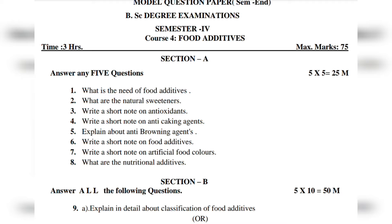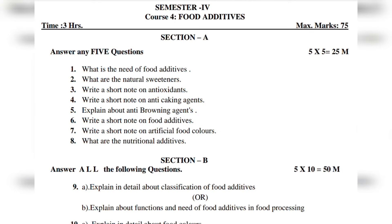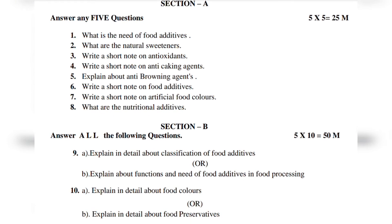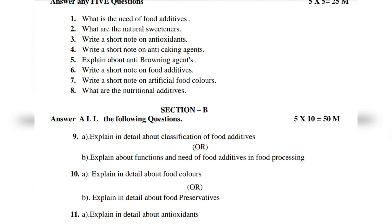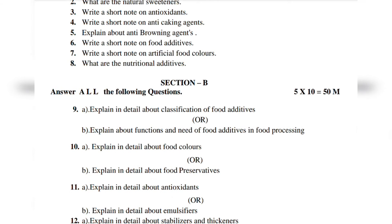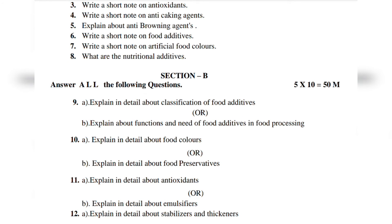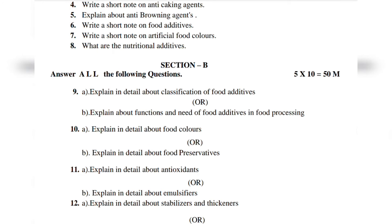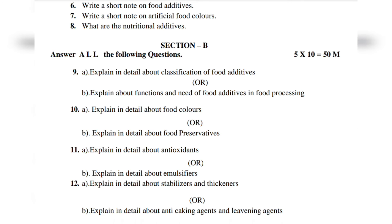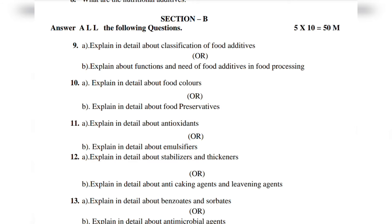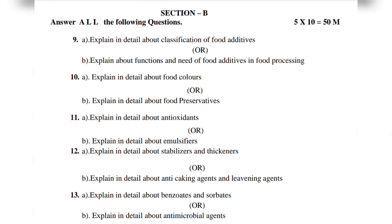Now the essay questions. Choose from these: Explain in detail about classification of food additives. Explain about functions and need of food additives in food processing. Explain in detail about food colors. Explain in detail about food preservatives. Explain in detail about antioxidants. Explain in detail about emulsifiers. Explain in detail about stabilizers and thickeners. Explain in detail about anti-caking agents and leavening agents. Explain in detail about benzoates and sorbates. Explain in detail about antimicrobial agents.